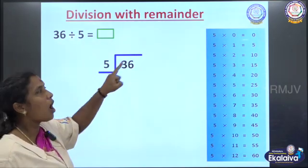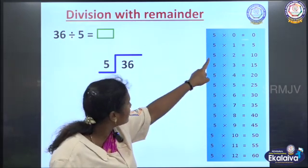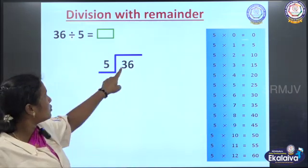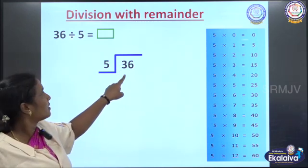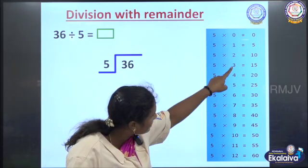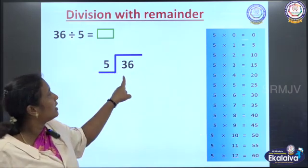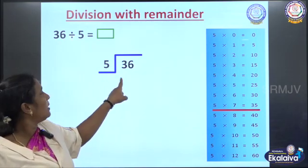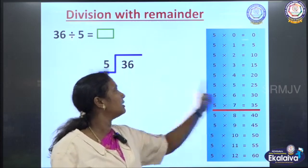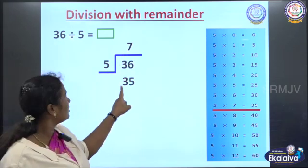Next, in 36, how many times will 5 come? We are going to find out. Where is 36 in the table? We do not have 36. We should not put a greater number here — we have to place a lesser number only. So find: 35 and 40 are there. We cannot place 40 since it is greater, so we place 35. 5 sevens are 35, so here we write 7, and below we write 35.